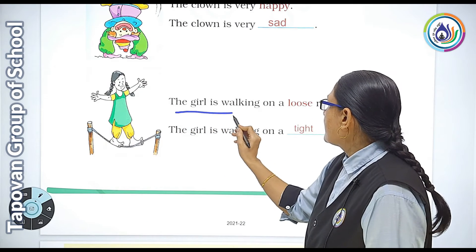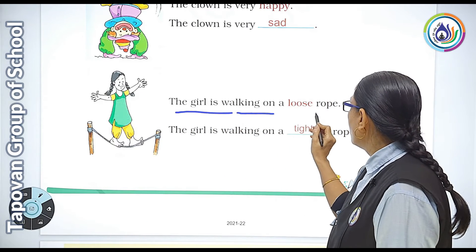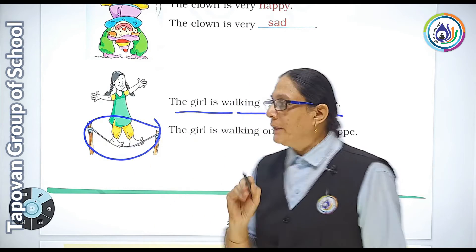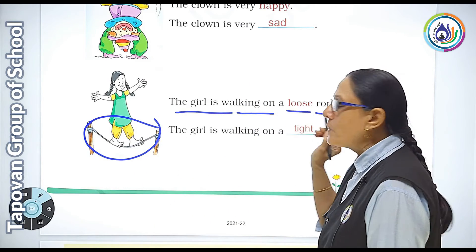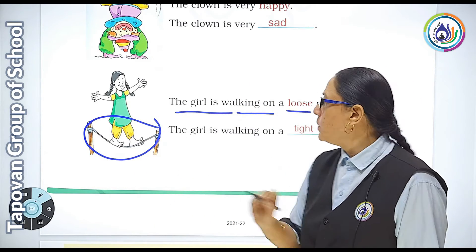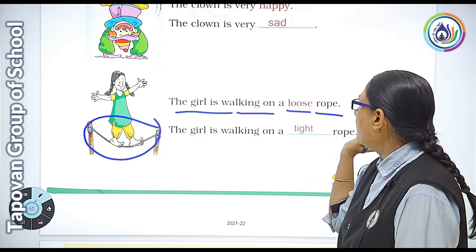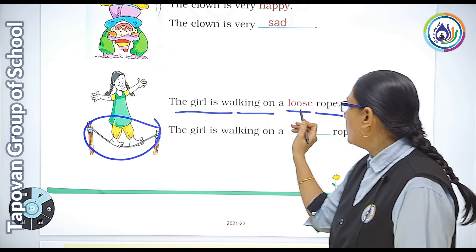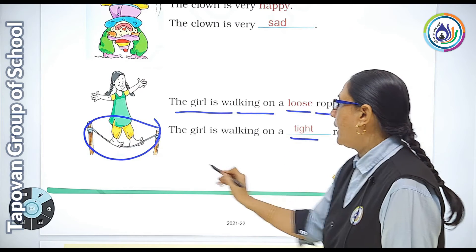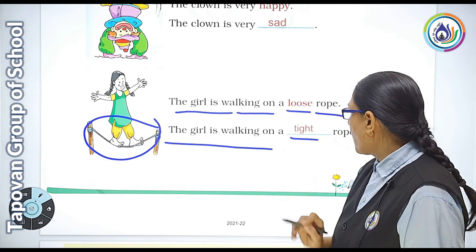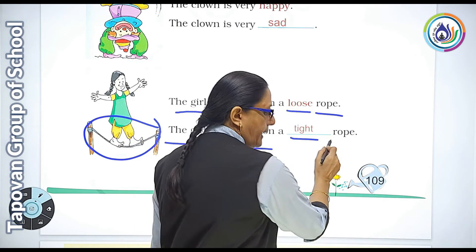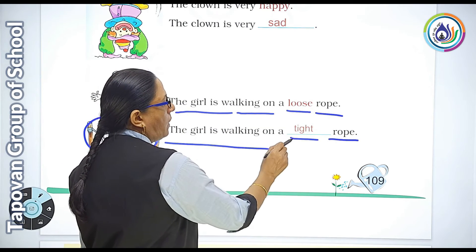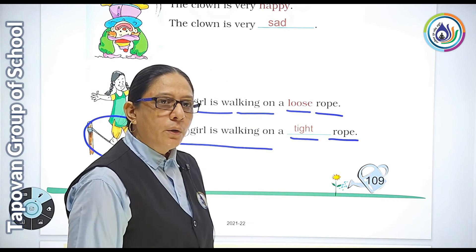The girl is walking on a rope — that rope is loose. The opposite of loose is tight. So: the girl is walking on a tight rope.